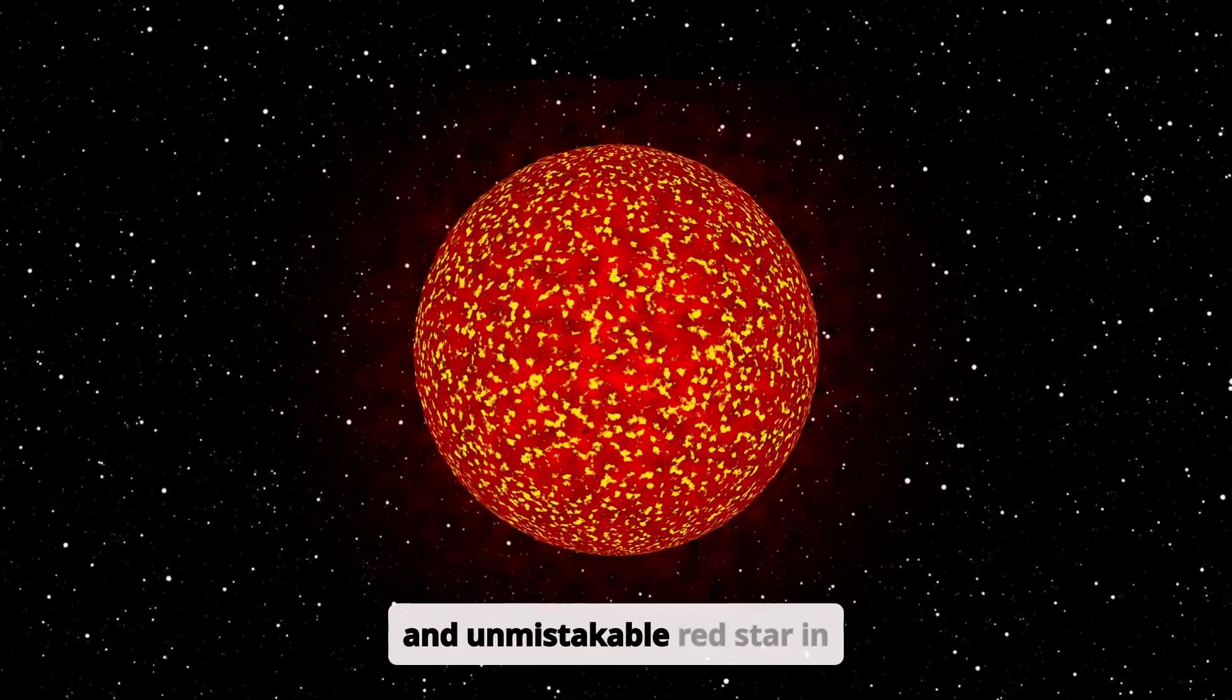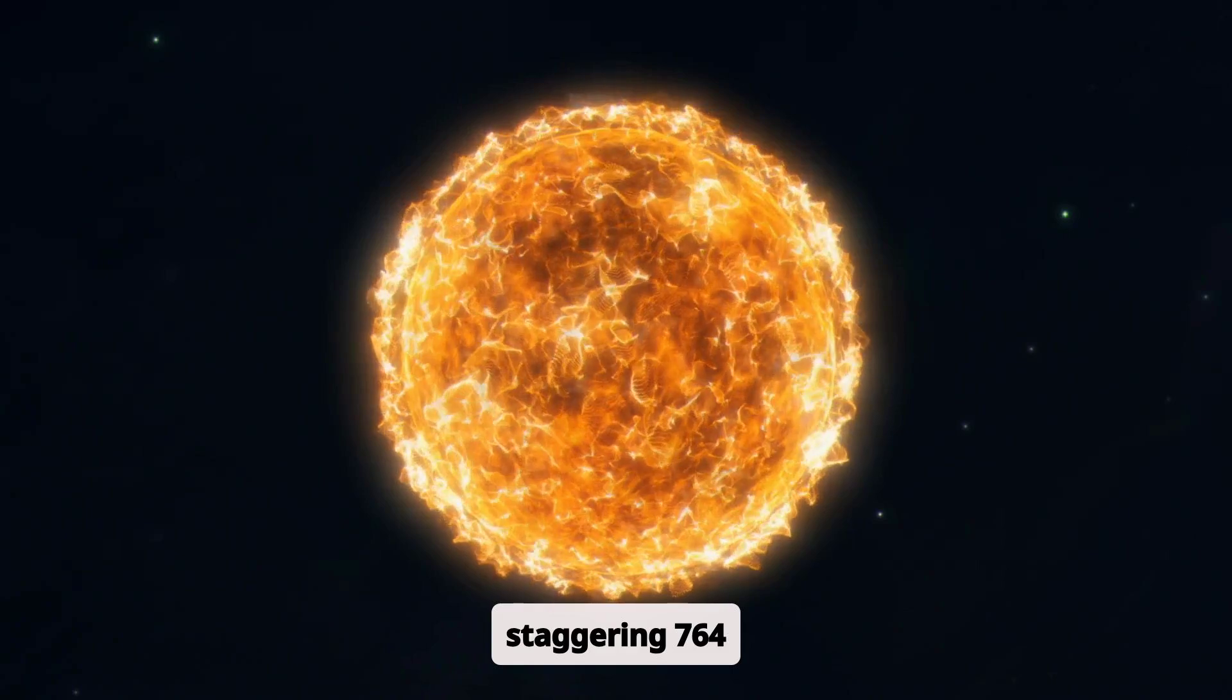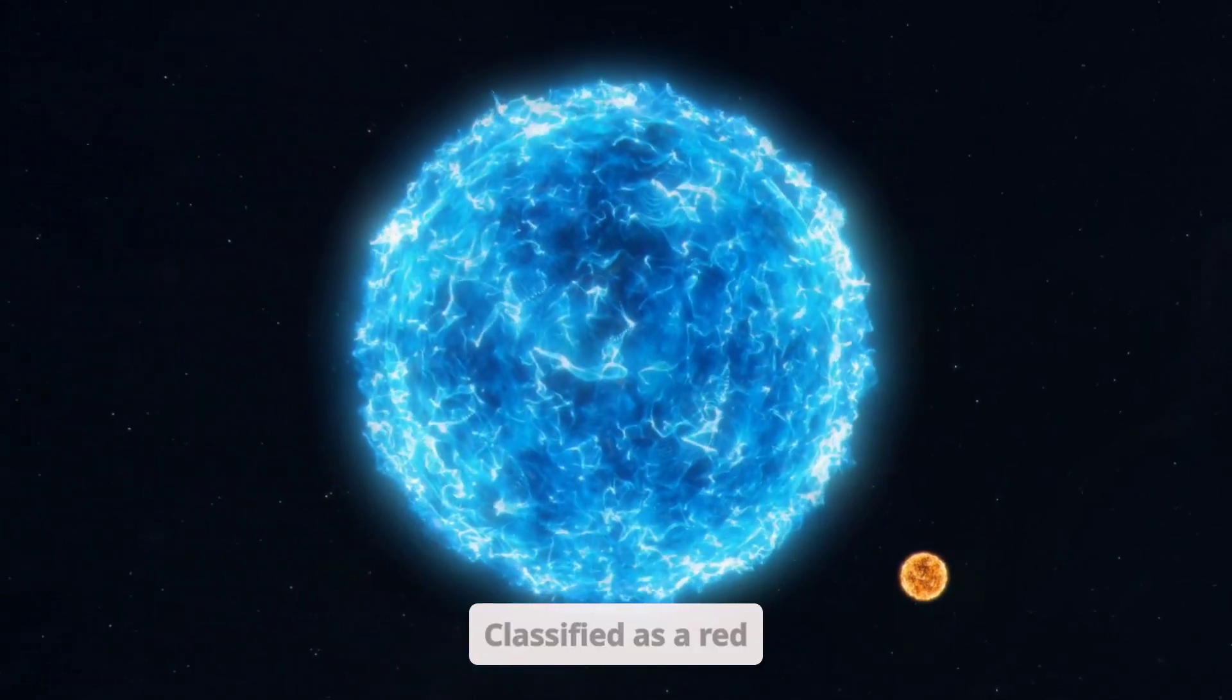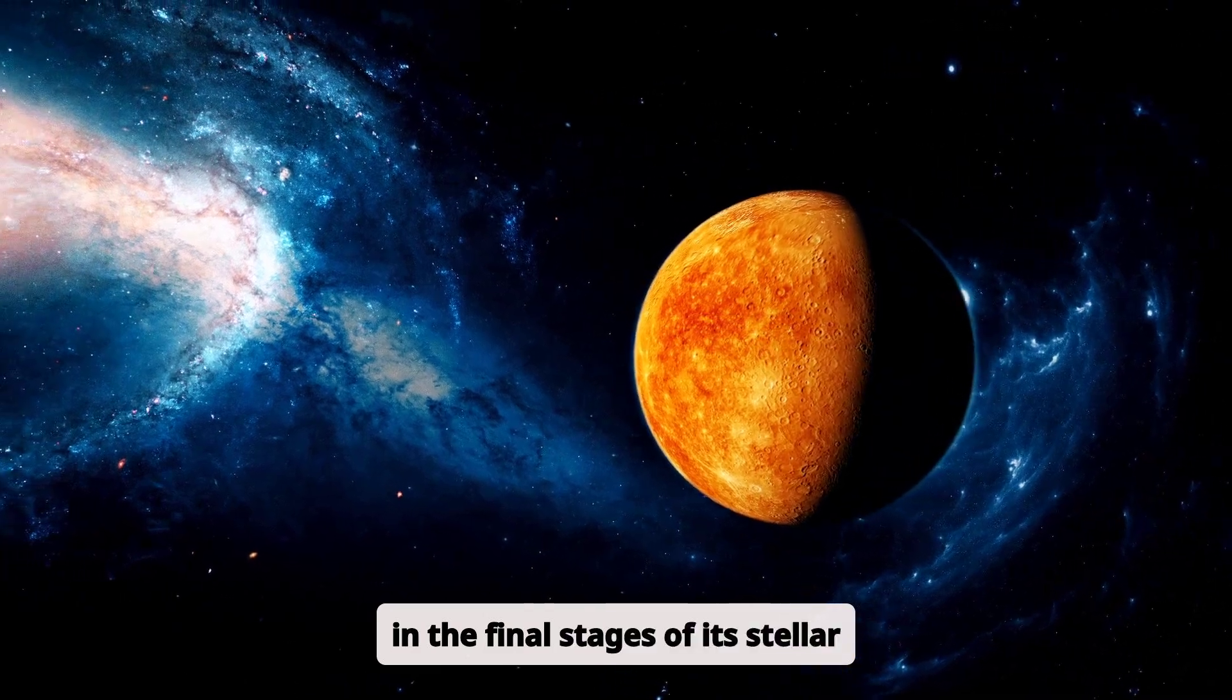Betelgeuse, a bright and unmistakable red star in Orion's shoulder, is a staggering 764 times the size of our sun, making it one of the most massive stars visible to the naked eye. Classified as a red supergiant, Betelgeuse is in the final stages of its stellar life.